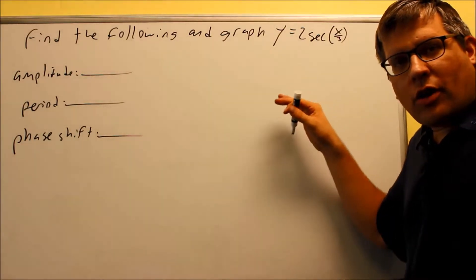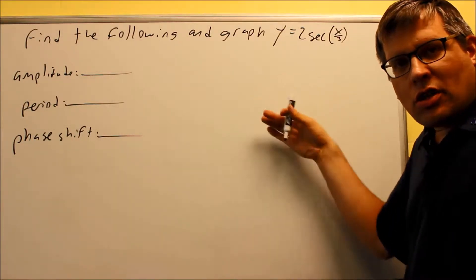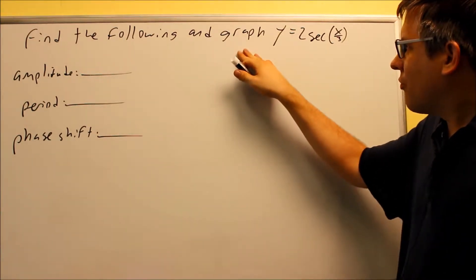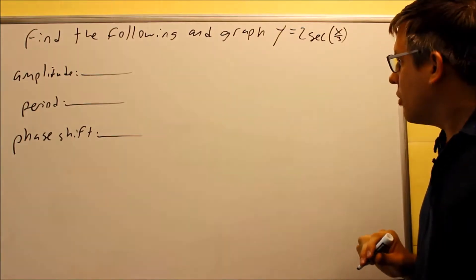Okay, so now that we've taken a look at the graph of cosecant and secant, let's do some examples. This is the first one we're going to look at. Find the following and graph 2 secant x over 3.